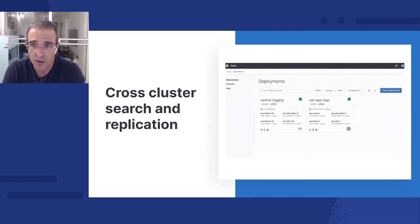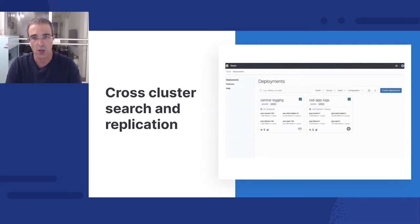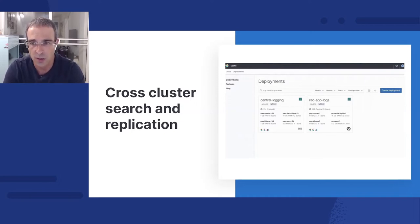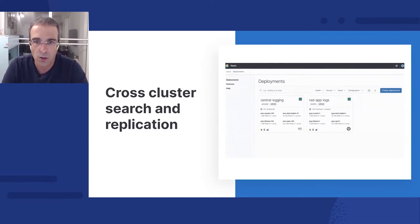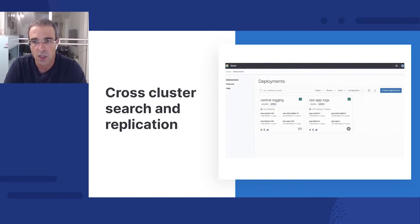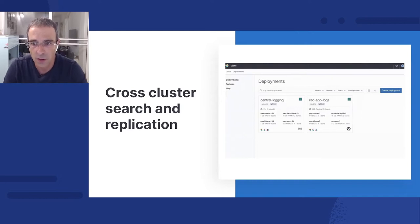Elastic Cloud is available across three cloud providers in 45 regions. Imagine a global deployment that replicates data between multiple regions and cloud providers, or lets you search across all of them in a single search request. You can do that with cross-cluster replication and search. Cross-cluster replication places replicas in other regions, improving reliability and lowering latency. Cross-cluster search breaks down geographically disparate data silos by letting you search across multiple clusters, even across different cloud providers. Elastic Cloud handles all the underlying configuration and trust establishment between clusters.